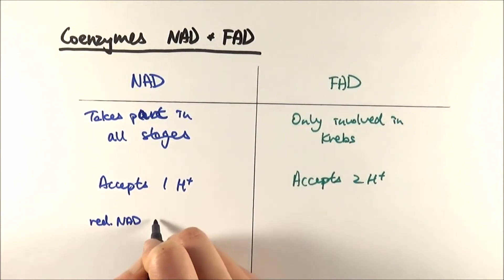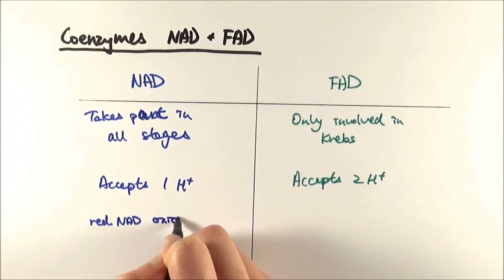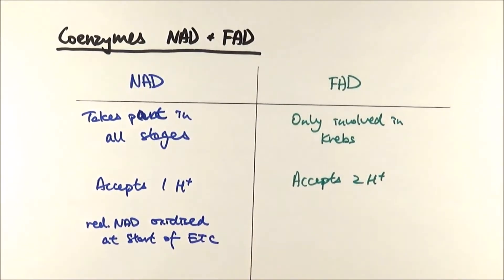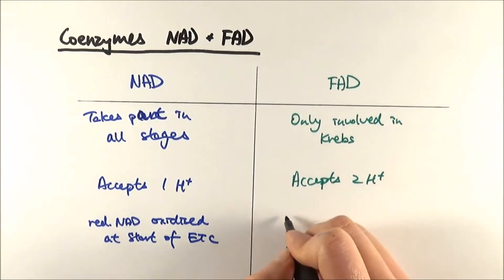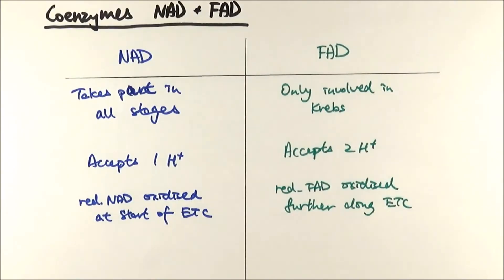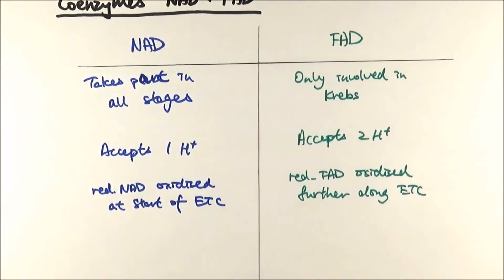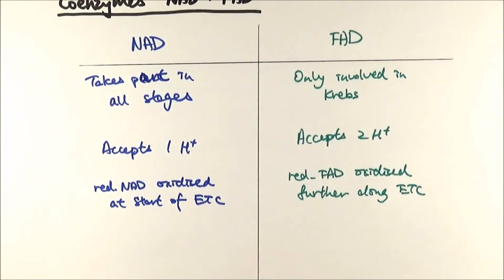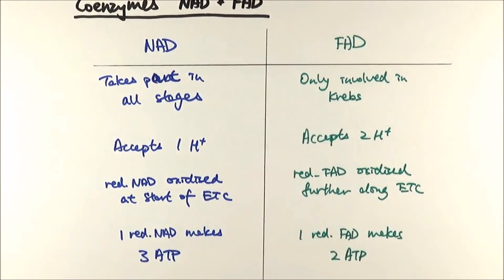Reduced NAD is oxidized at the beginning of the electron transport chain, whereas reduced FAD is oxidized further along in the electron transport chain. The final thing to consider is that each reduced NAD can make three ATP, whereas each reduced FAD can only make two.